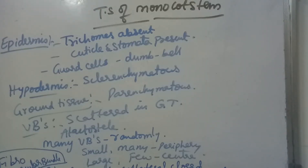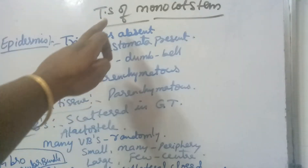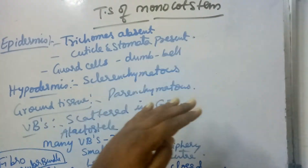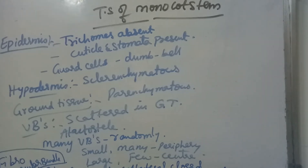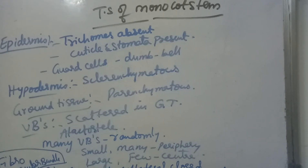Now we compare the transverse section of monocot stem with dicot stem. In dicot stem, three distinct zones — epidermis, cortex, and stele — were seen, with hypodermis, general cortex, endodermis in cortex, and pericycle, vascular bundles, pith, medullary rays in stele. In monocot stem, only four distinct areas are identifiable.